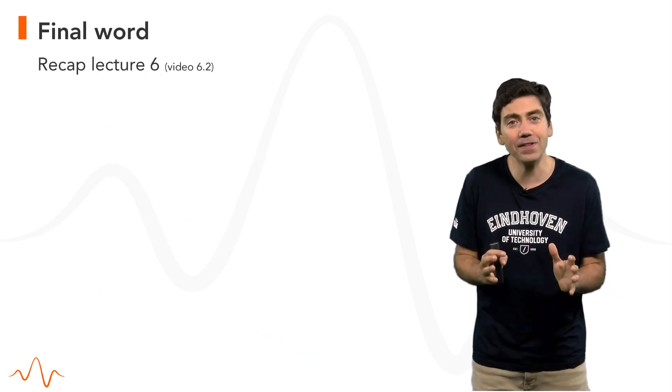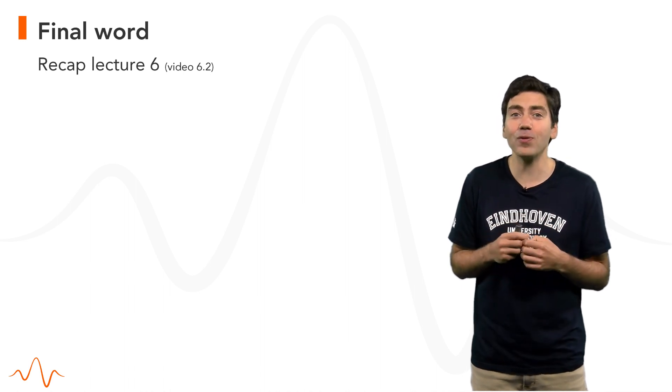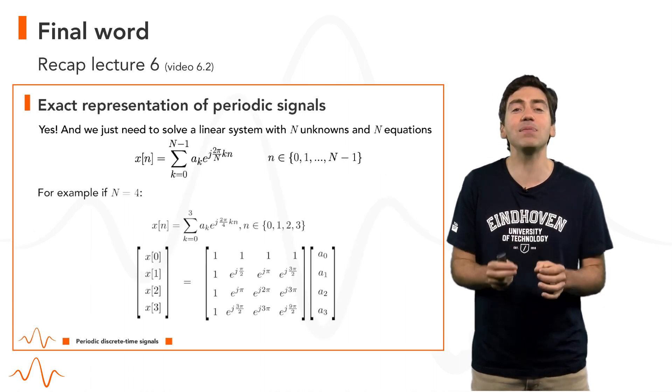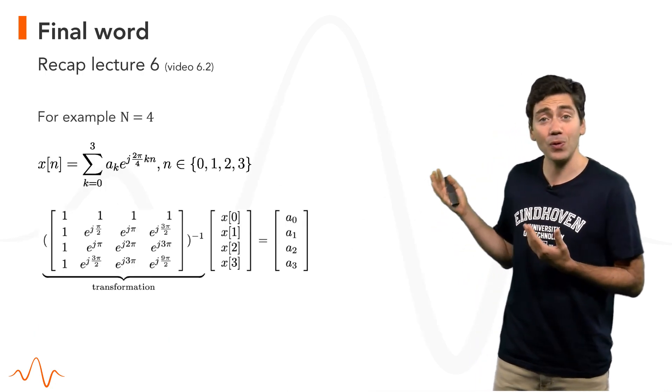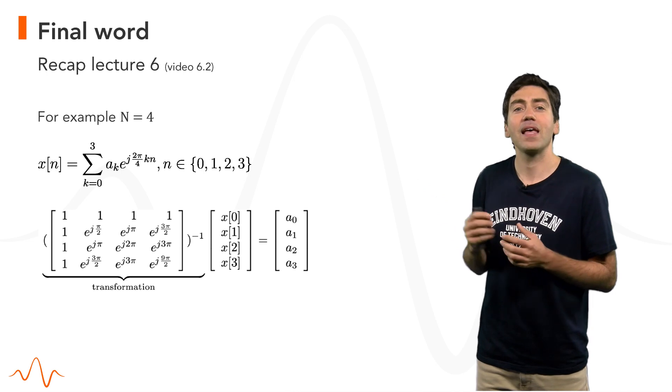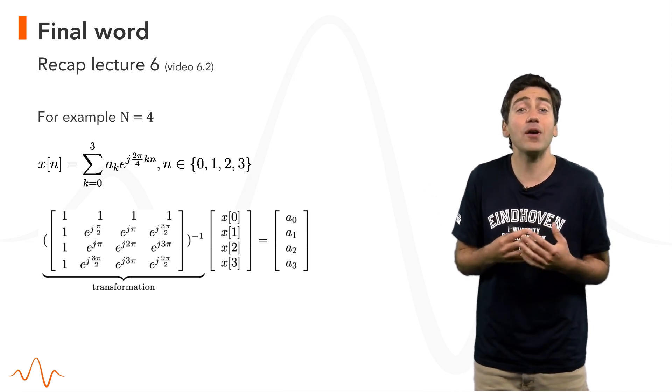Now, we said that the DFT, which is very connected to the Fourier series, can be computed by simply solving a linear system. This means applying a transformation to the original signal X. This transformation is actually a rotation as well.